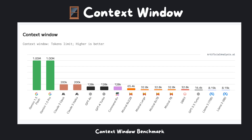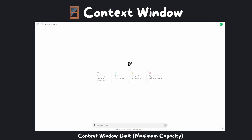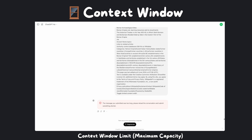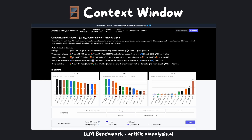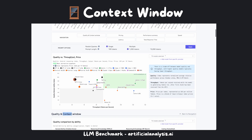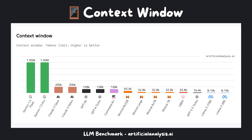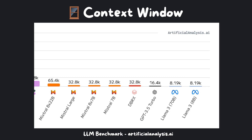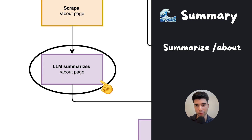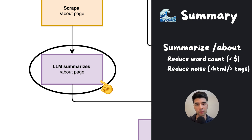Moving on to the summarizing step: there are elements of something called a context window — it's a limit on how many words you can put in your prompt. If you've ever tried to paste the entire Wikipedia page of the Roman Empire and asked ChatGPT to summarize it, you've probably hit that limit. Quick tip: there's a website called artificialanalysis.ai where you can compare quantitatively the differences between all the latest models. One of the many attributes people pay attention to is the context window — for the model we'll be using, it is 8,192 tokens, which is on the lower end. We've chosen to summarize the about page for two reasons: it acts as compression for further processing, essentially reducing the number of tokens and making it easier to respect the context window limit. It can also help remove noise such as tags that weren't removed in the parsing step.